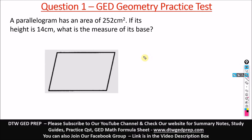Most times GED geometry questions don't just say 'find the area of the parallelogram.' They will give you the area, give you one dimension, and tell you to find the missing dimension. This video is all about helping you find the missing dimension in various math formulas — for example, when you have R cubed, how do you find R itself? You can get the math formula sheet on our website dtwgedprep.com. Links to summary notes, study guides, free practice questions, my course, and our Facebook group of over 15,000 members are all in the video description box. One-on-one math tutoring is also available.